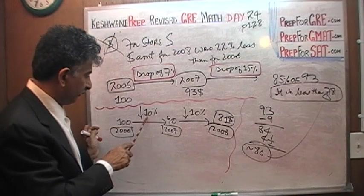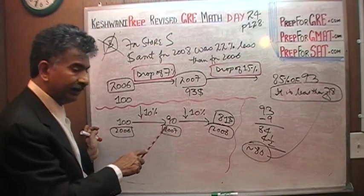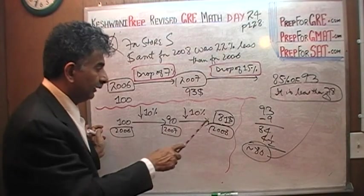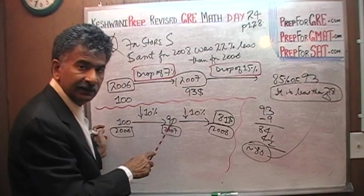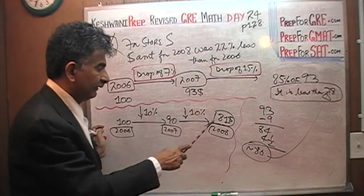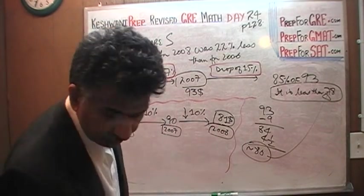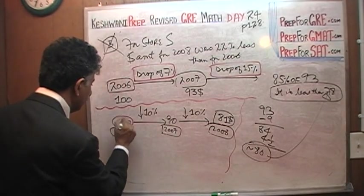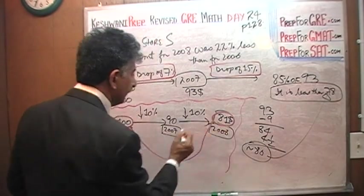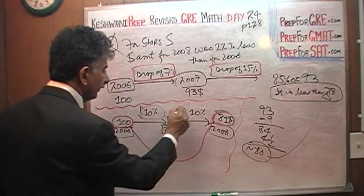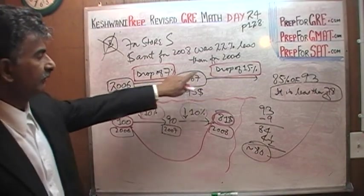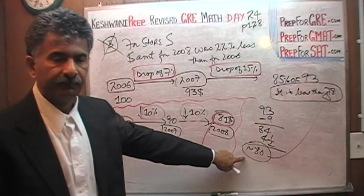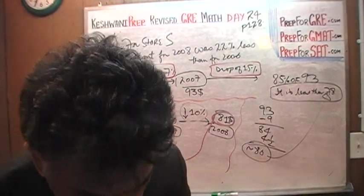We are no longer dealing with a base of 100. So from 2006 to 2007, 10% drop takes you from 100 to 90. And then from 2007 to 2008, a 10% drop takes you from 90 to 81. Because 10% of 90 is 9. 90 minus 9 is 81. So the final drop that we see here from 100 to 81 is not the sum of these two figures, which is what they are doing here. They are taking 7% and 15% and coming up at 22%. That is not the case here. The second statement is false.